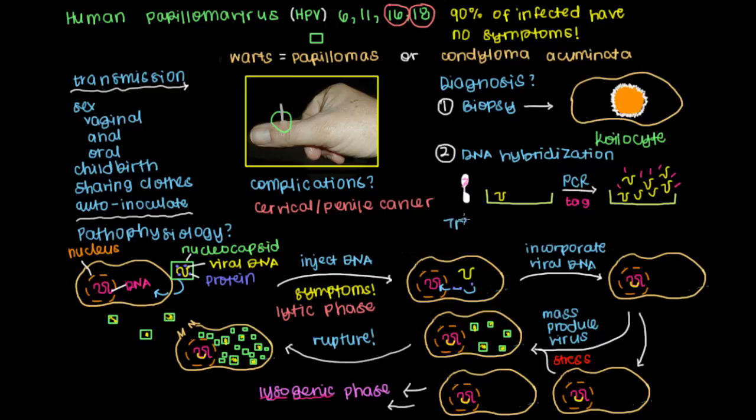Now that we've made our diagnosis, how do we treat HPV? The mainstay of treatment, which is in contrast to most other sexually transmitted infections, is to burn off the wart. Because that's the only symptom, that usually takes care of the problem. Things you can use to burn off the wart are liquid nitrogen or salicylic acid.